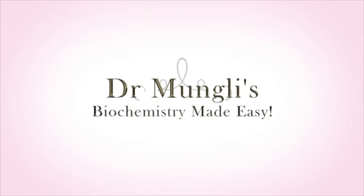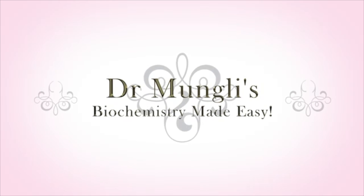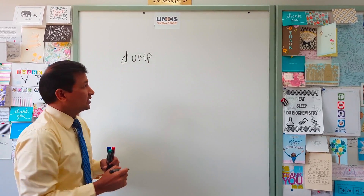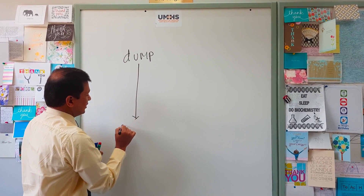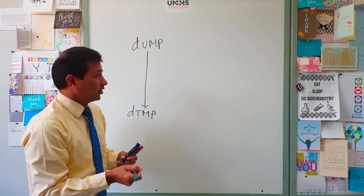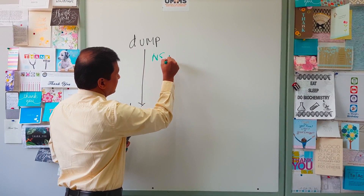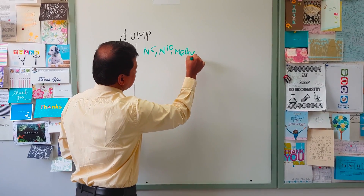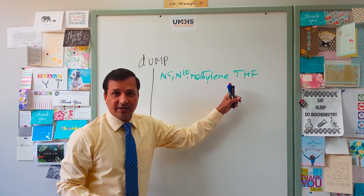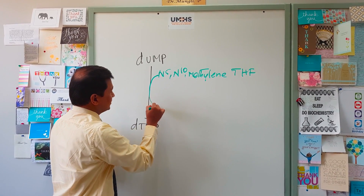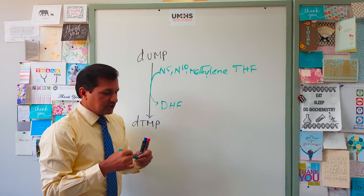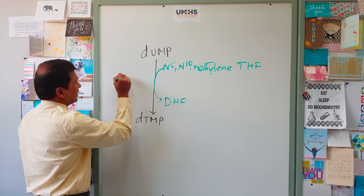Let us begin with deoxyuridine monophosphate. It will be converted into deoxythymidine monophosphate, and for this you need a coenzyme: N5,N10-methylene tetrahydrofolate. This coenzyme enters the reaction and is released as dihydrofolate. This job is done by an enzyme called thymidylate synthase.